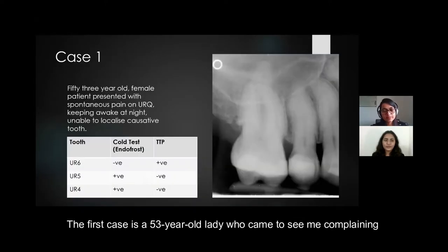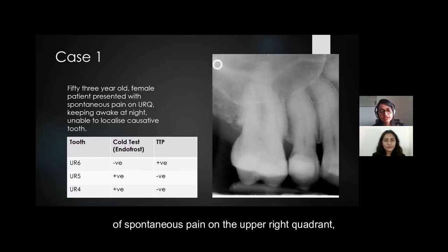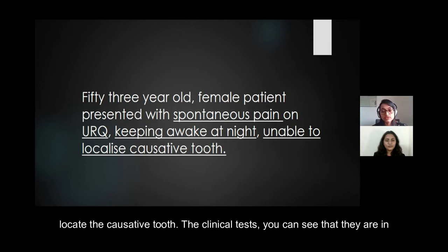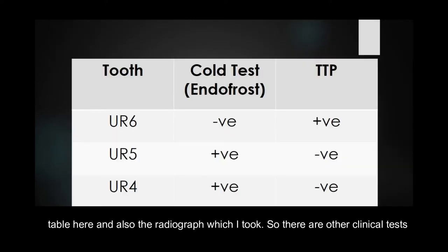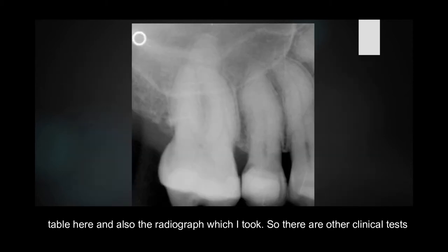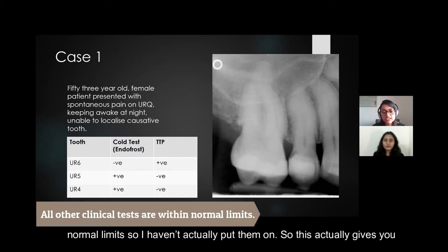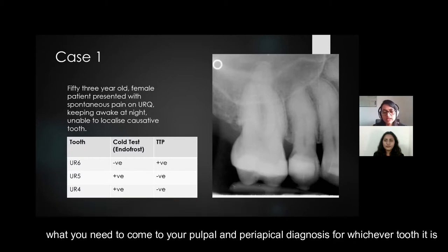The first case is a 53-year-old lady who came to see me complaining of spontaneous pain on the upper right quadrant. This was keeping her awake at night and she could not locate the causative tooth. The clinical tests are shown in the table here, along with the radiograph. Other clinical tests including periodontal pocketing and palpation tests were within normal limits, giving you what you need to arrive at your pulpal and periapical diagnosis.